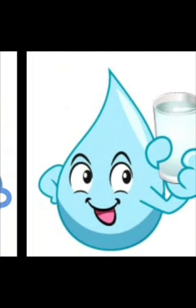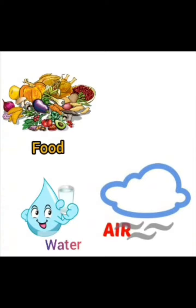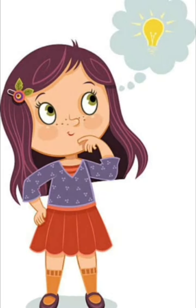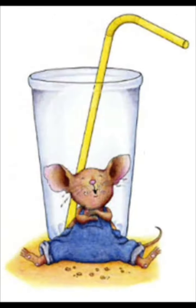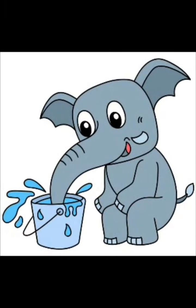Food, water and air are the needs of every living thing, isn't it? We all need food, water and air. But there are differences in the needs of each kind of living thing. For example, the amount of water a mouse drinks in an entire day would not be enough for an elephant even at one time.